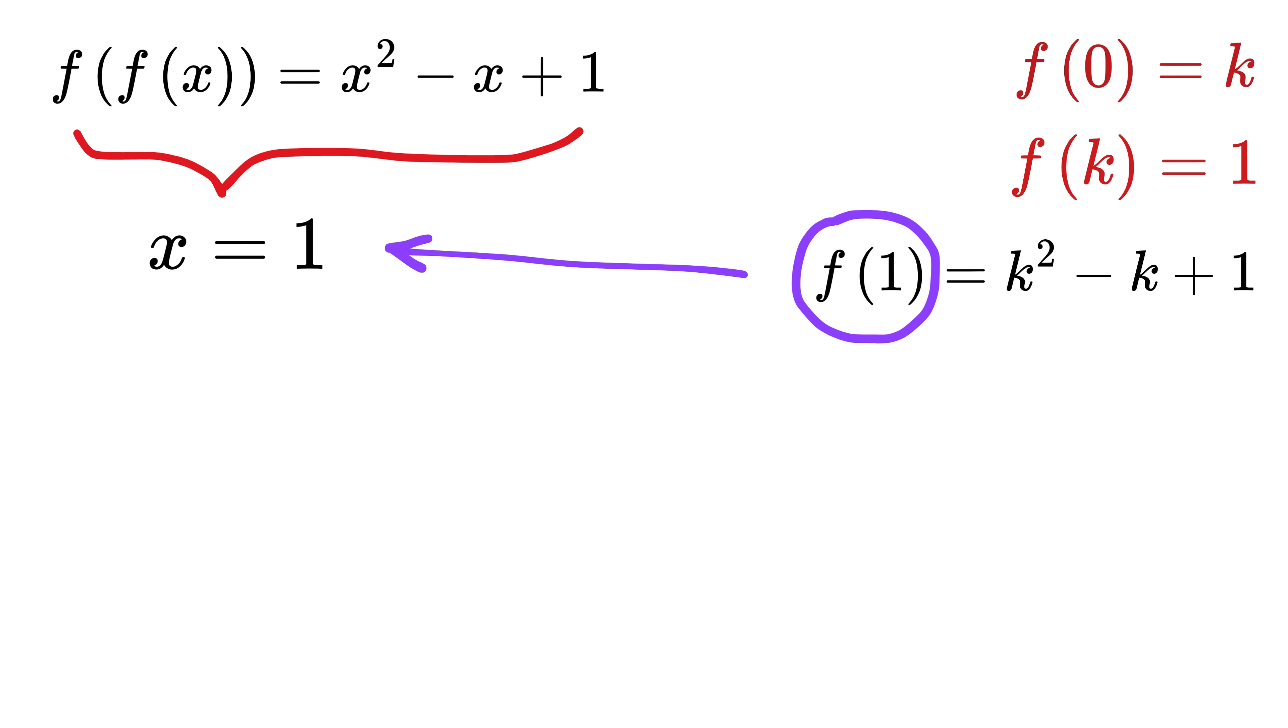Next, let us examine what happens when we plug in the value of x as 1. It gives f of f of 1 equals 1 square minus 1 plus 1, which also simplifies to 1. So we have f of f of 1 equals 1. Let us repeat the same thing we did for the zero case. So, let m denote the number that equals f of 1. Put it here to get f of m equals 1.